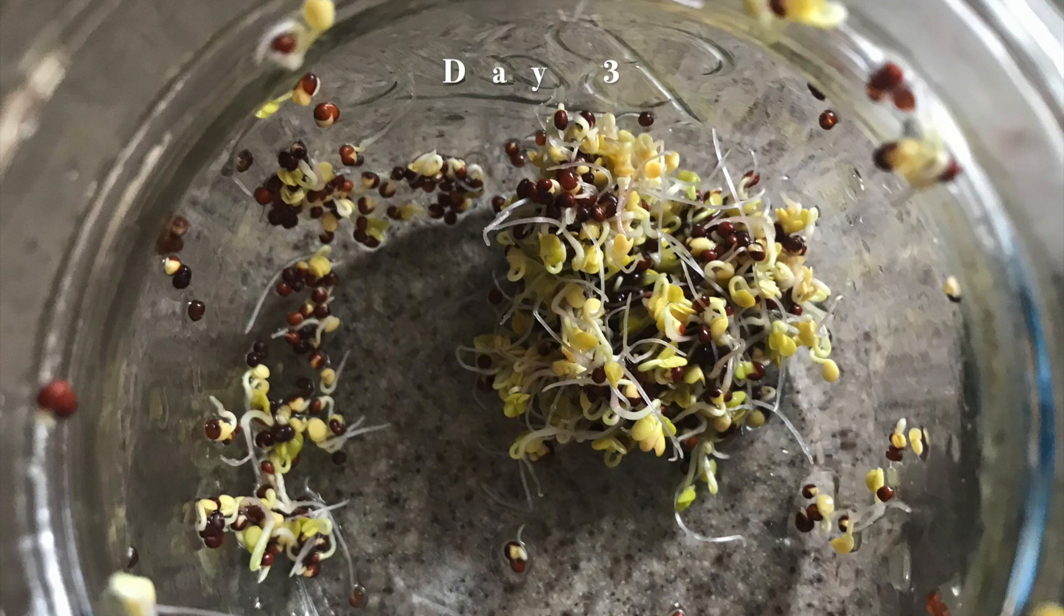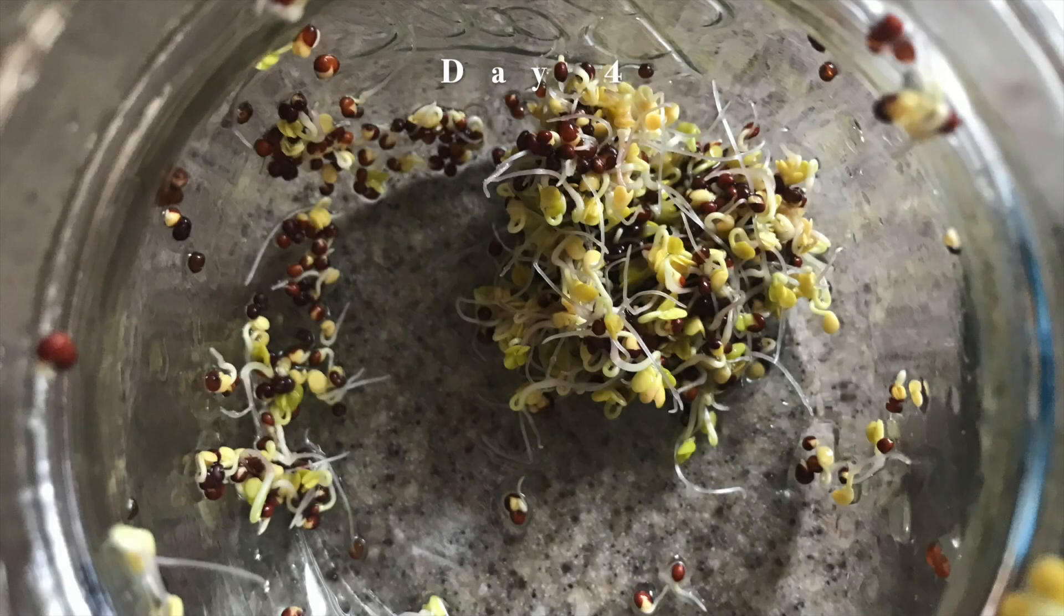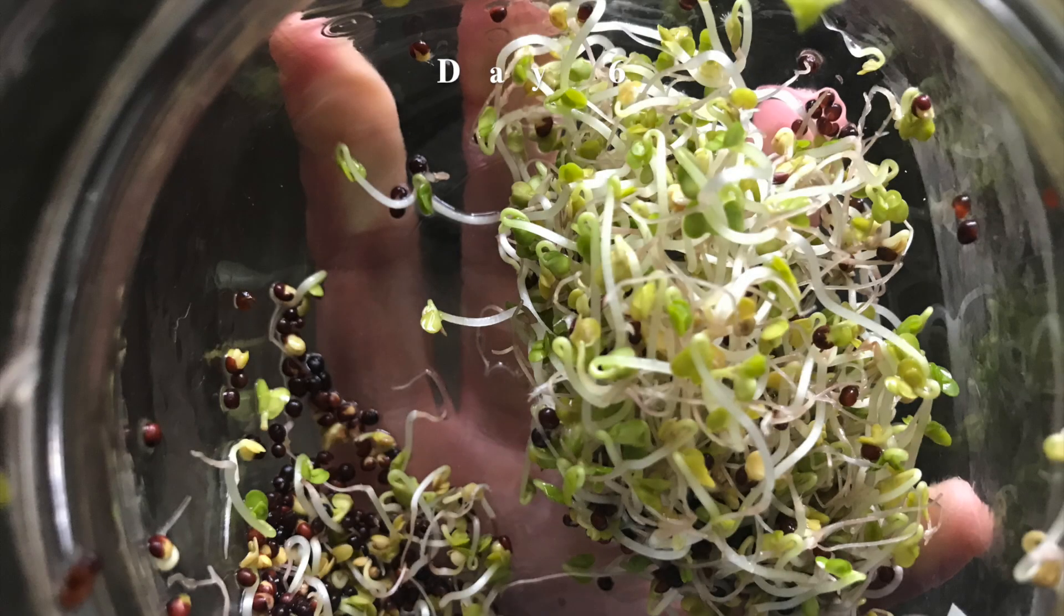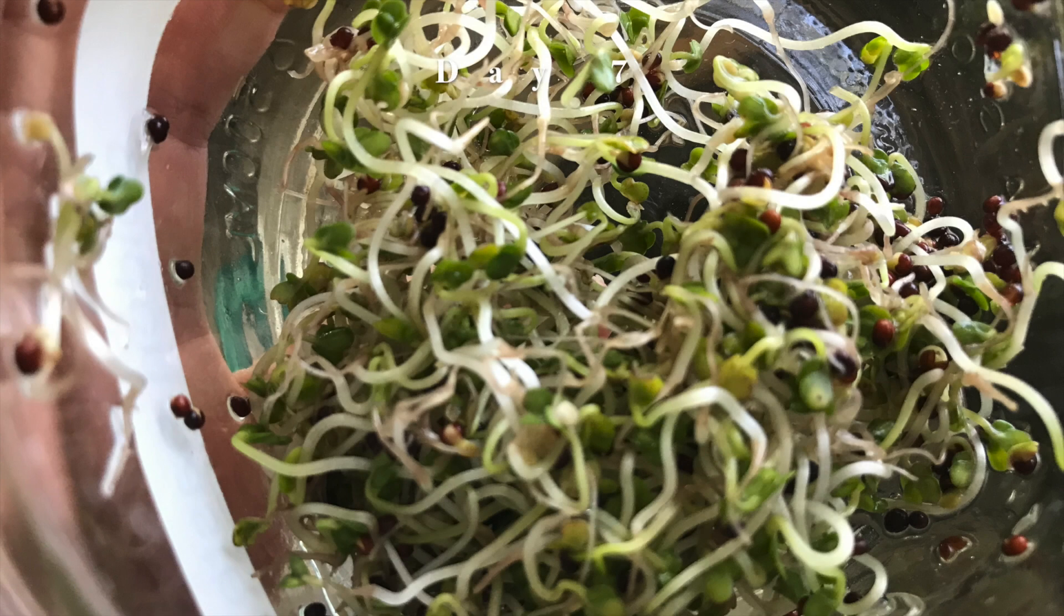Now as for how long you want to sprout your broccoli seeds that really depends on what you're going for. If you're looking to produce optimal amounts of sulforaphane which is the phytonutrient I mentioned in the beginning with the anti-cancer properties then I would harvest them around day two or day three because that is when the cotyledons first appear. When those first start to appear that is when the sprouts have the highest amount of the precursor to sulforaphane which is glucoraphanin. Personally I wait until my sprouts are a little larger so they're about an inch long or longer and the cotyledons have turned fully green. I have no scientific evidence to back me up but I feel intuitively that we should eat things when they look their best when they're the most vibrant and for me this occurs on day five to day seven depending on the temperature in the room.